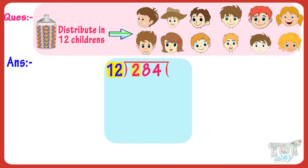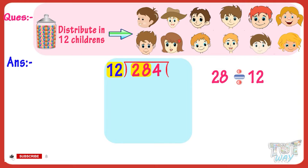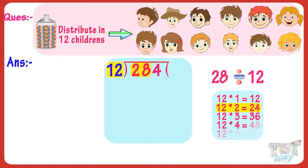So, take the first two digits of the dividend, that is, 28. Now, we have to divide 28 by 12. So, find the multiple of 12 which is close to 28. 12 multiplied with 2 is 24.